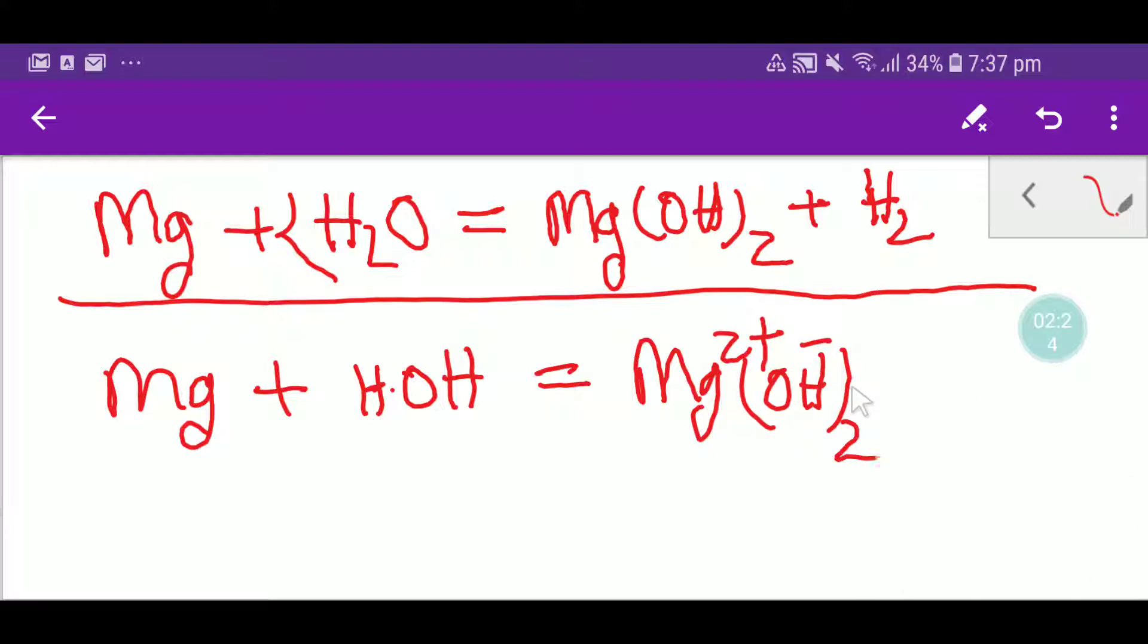So to balance the positive and negative charge, I have to put here two, because we have two plus so we need two minus. And for this we have to add subscript two.